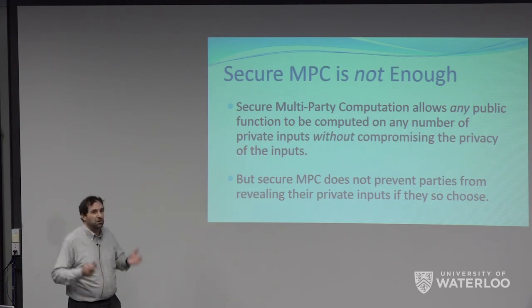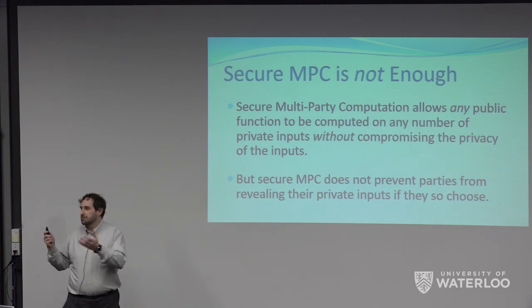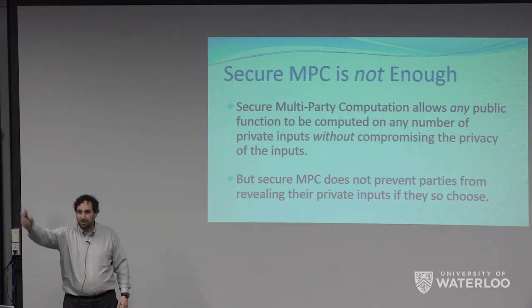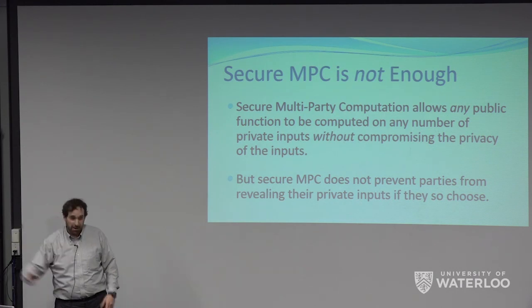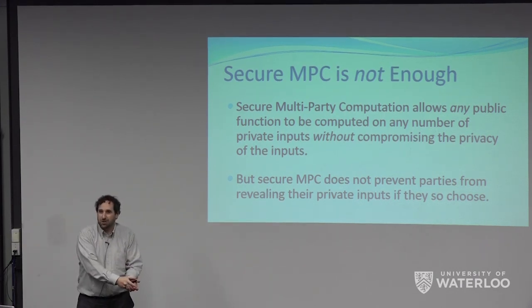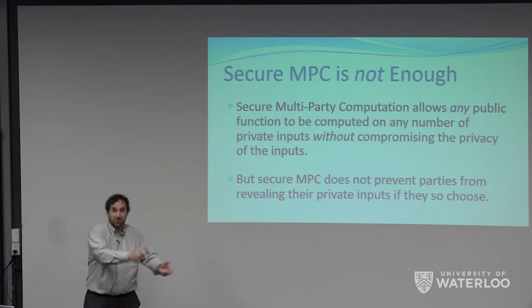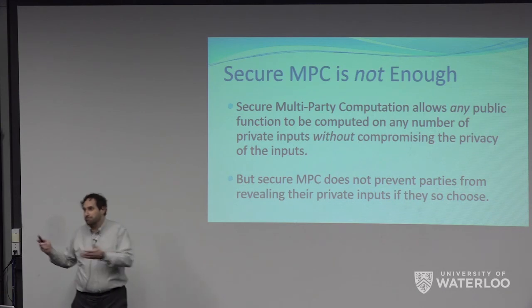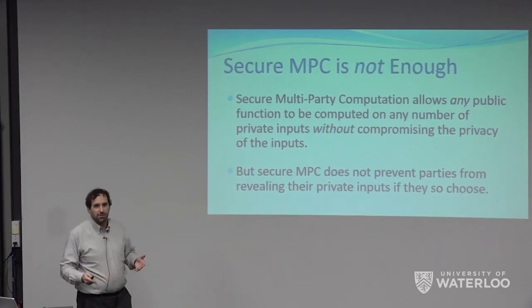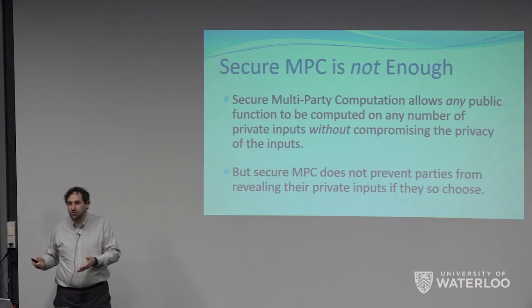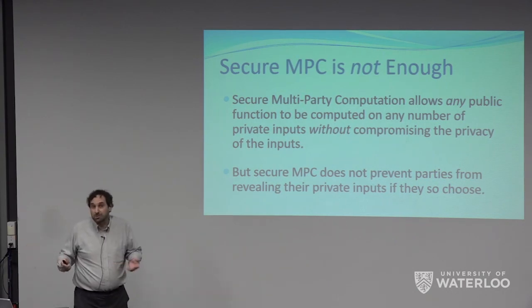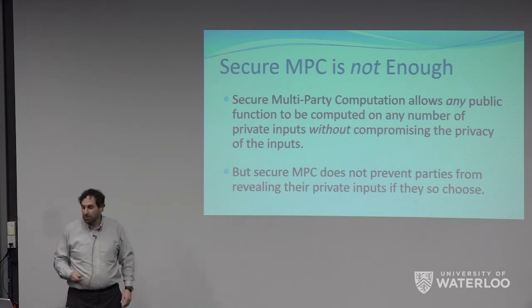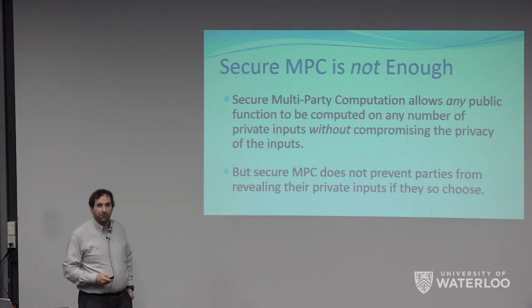But for elections, it's not enough. Secure multi-party computation does not prevent individuals from participating in this protocol and then showing — here's the encrypted value that was my input, here's the plaintext that corresponds to it, and here's the randomness I used so you can see this really is the encryption that went into the system. So I can prove this if I want to in a multi-party computation, and therefore I could be coerced.